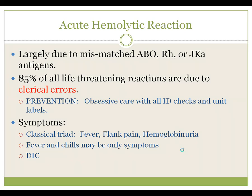Immunologically, these are frequently due to RH epitopes, JK, or ABO incompatibility. The classic triad is fever, flank pain, and hemoglobinuria. Other symptoms that can occur are chest pain, shortness of breath, and an impending sense of doom.